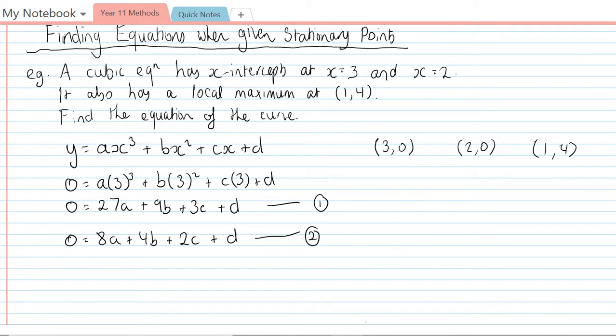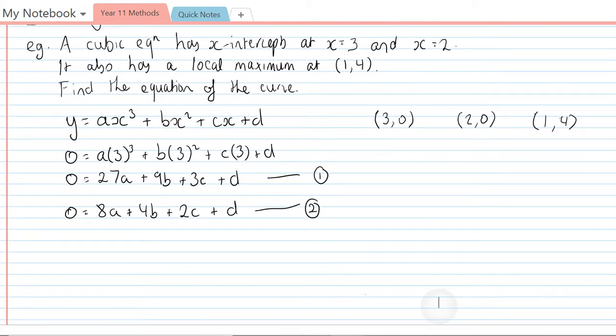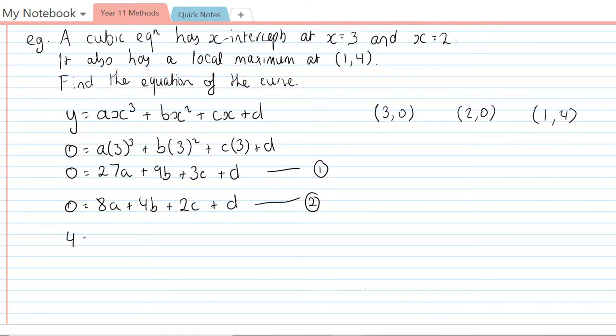The third equation comes from the coordinates (1,4), so I know that when y equals 4, x should equal 1. That's going to give me a times 1 cubed which is just a, b times 1 squared which is just b, and c and d, so 4 = a + b + c + d. That is the third equation. The fourth equation actually comes from the fact that we have a local maximum at the coordinates (1,4).